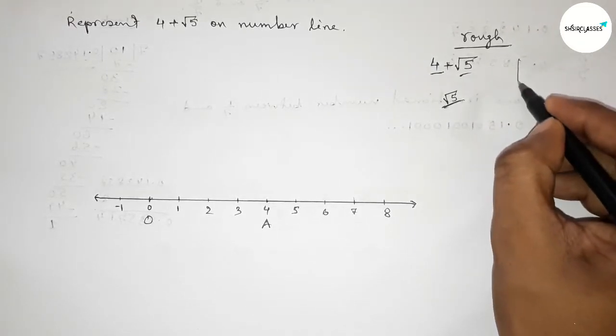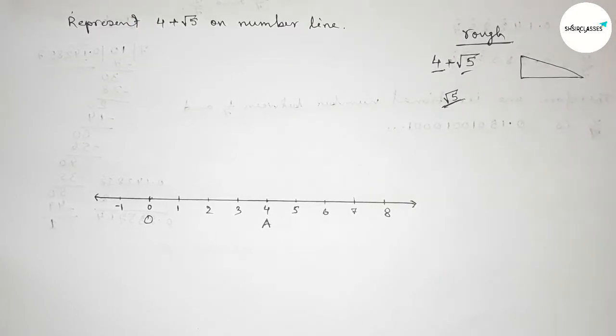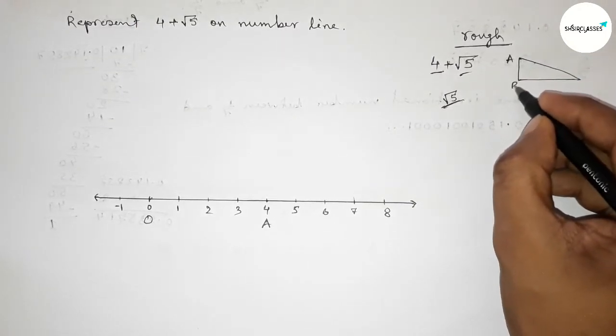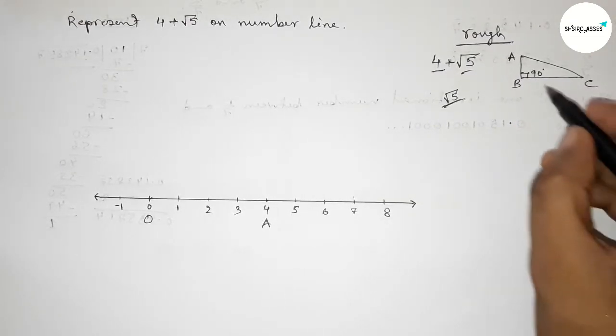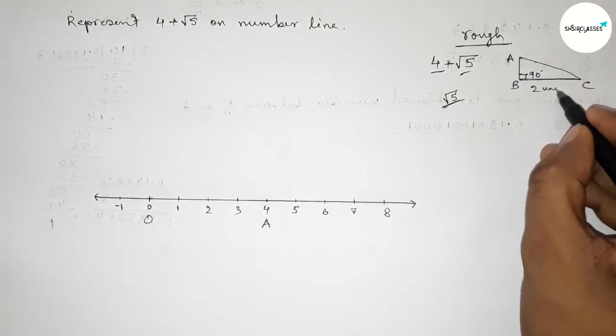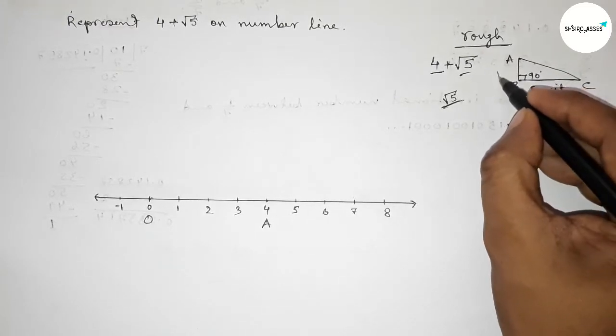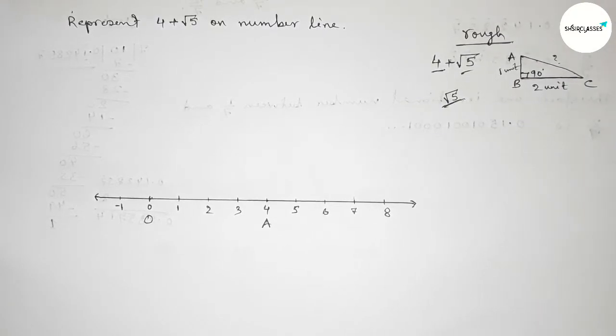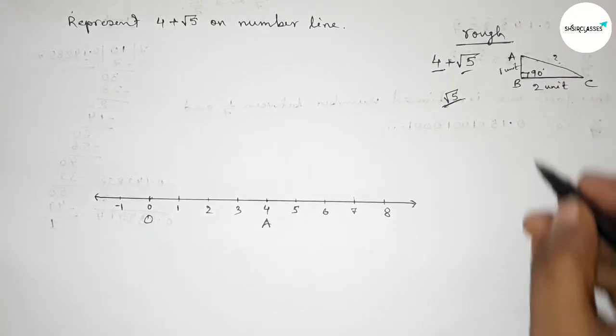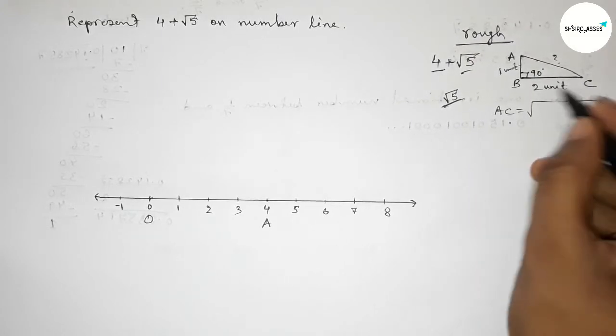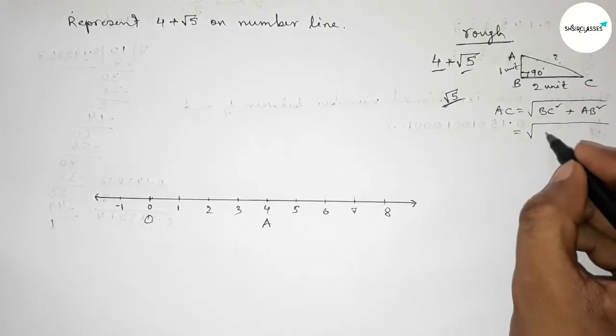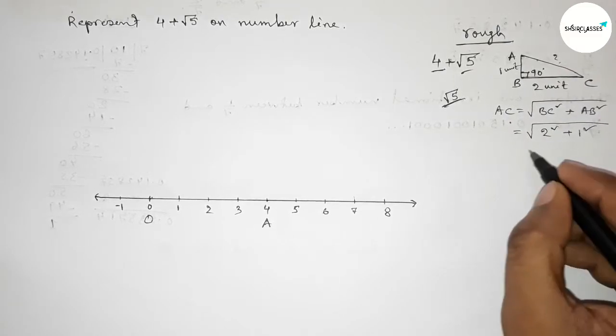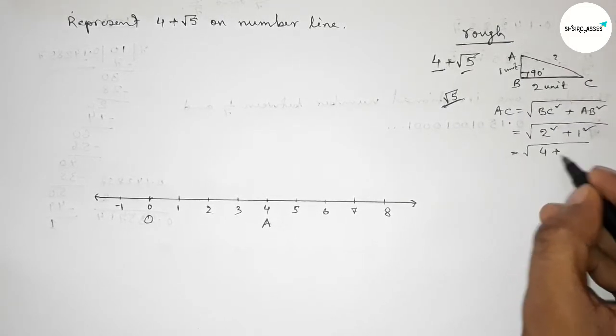Now first we have to construct a right angle triangle ABC. And if you take the base equal to 2 unit length and the perpendicular equal to 1 unit length, then what is hypotenuse? So by Pythagoras theorem, we know that hypotenuse equals √(base² + perpendicular²). So now putting the value, this is 2² + 1², so this is 4 + 1, so this is √5 unit length.